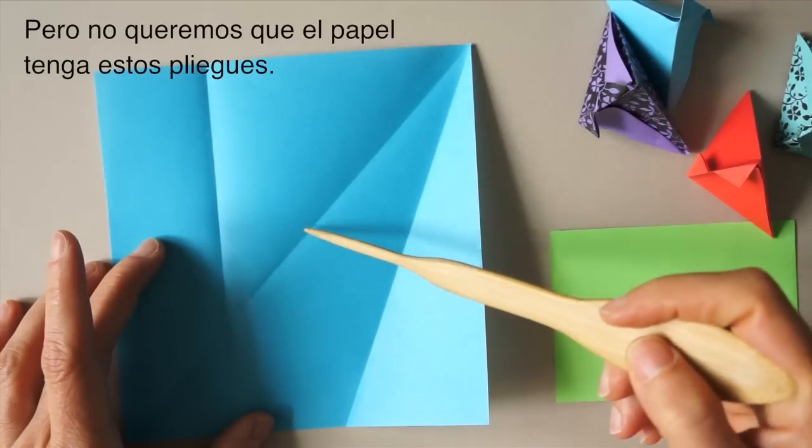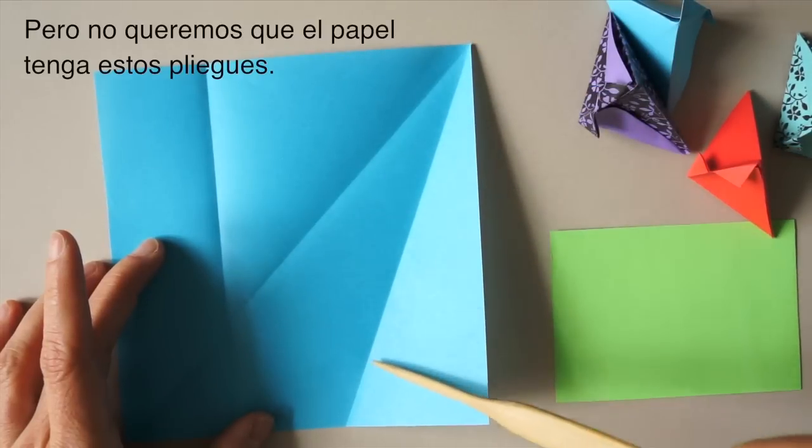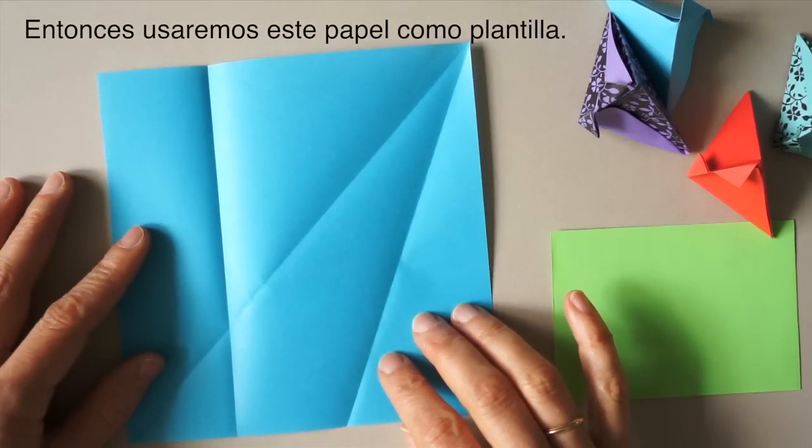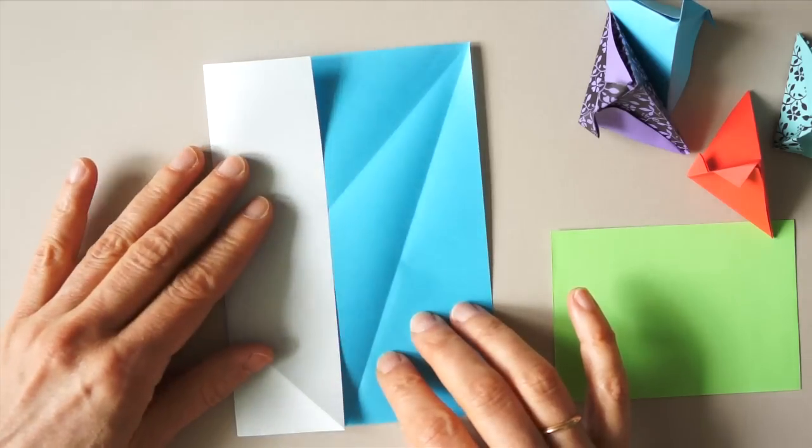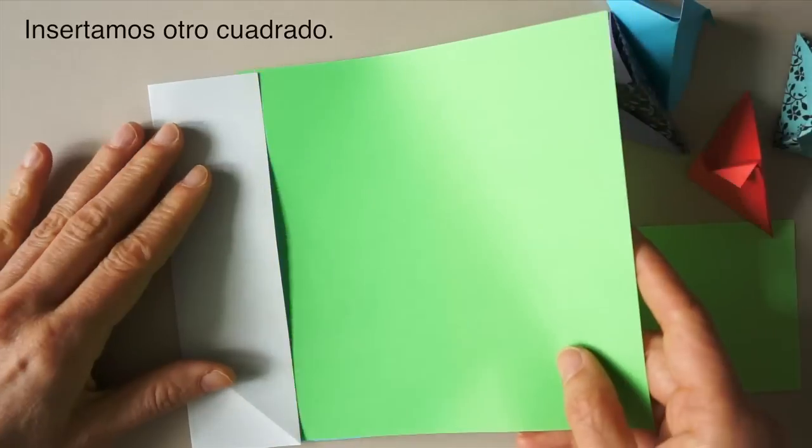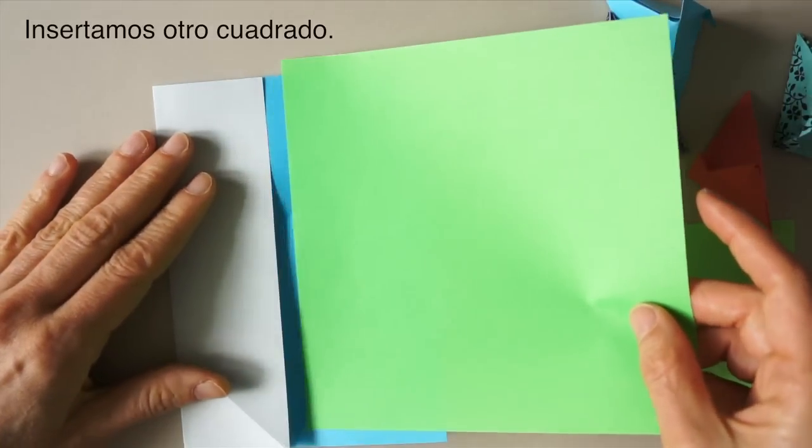But we don't want these folds here. This piece of paper is going to be a template to cut other rectangles. We keep it folded like this. We insert a piece of paper, another square.